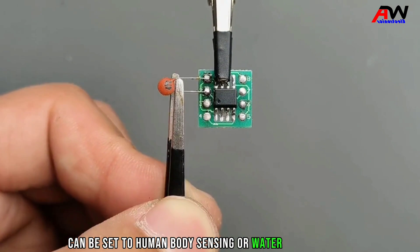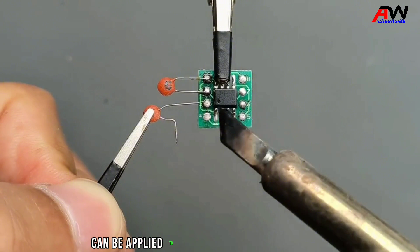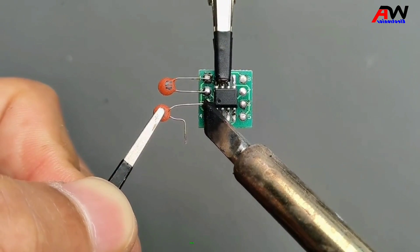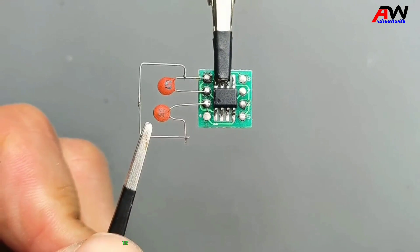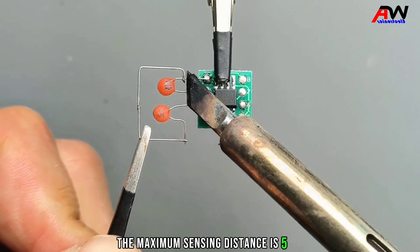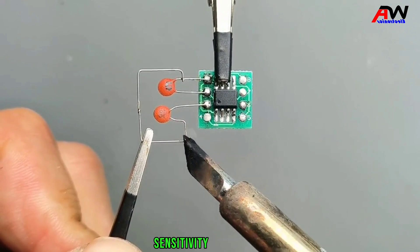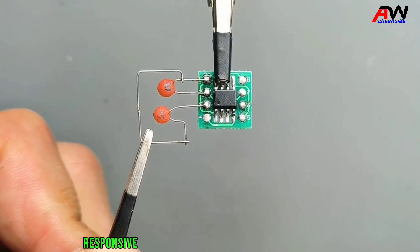Can be applied to hand scan sensor switch, touch switch, smart toilet, water level detection and other fields. The maximum sensing distance is 5 cm, sensitivity adjustable, responsive, and there are few peripheral components. Low cost, wide power supply voltage range 2.5 to 6 volts can be used.